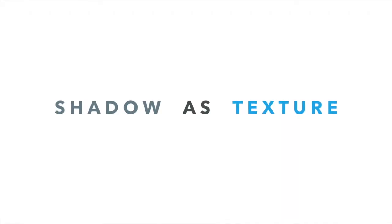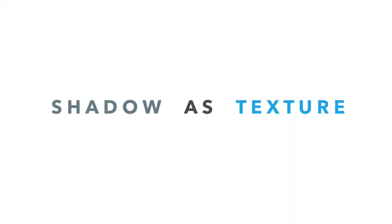Number four: shadow as texture. Mesh light structures or foliage provide a more textural shadow to cast onto a surface, giving your image more body and interest. If the surface with the shadow on it is already textured and patterned in itself, it offers even more variety and richness to your image.